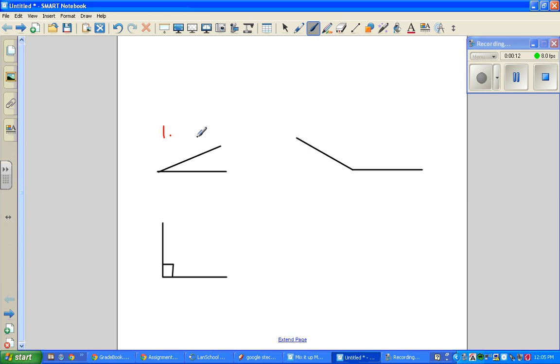The first one is called an acute angle. Sometimes we call it acute one because it's the smallest of the others. The opening is very small.